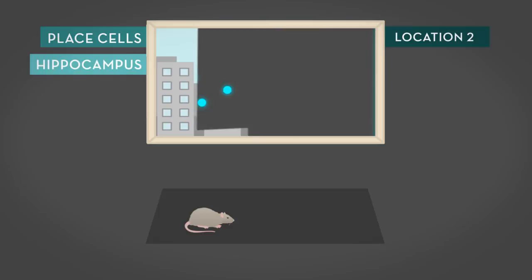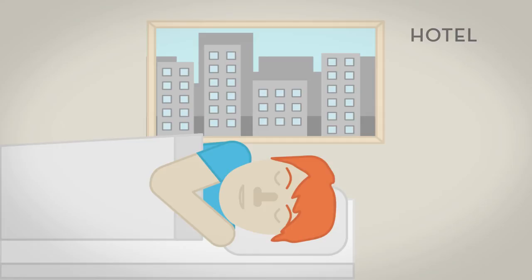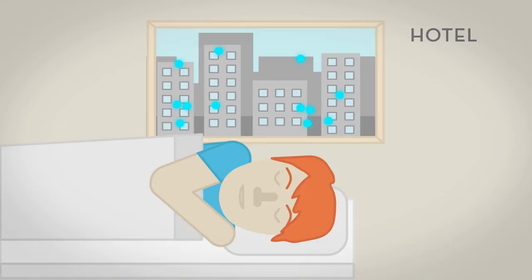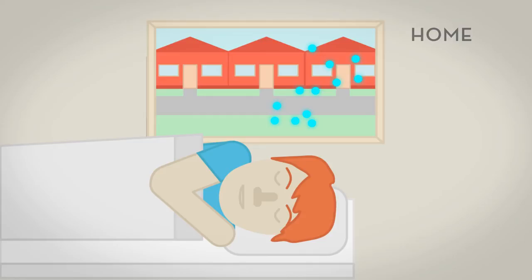Have you ever woken up in a hotel room after a long journey and found yourself struggling for a few seconds to figure out whether you were in your bedroom at home or at the hotel, and quickly switching back and forth between these two locations? Well, that can be explained by two different combinations of active place cells, each representing a stored map, alternatively switching between two memories, one from your own bedroom, the other from the hotel room.